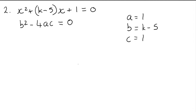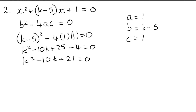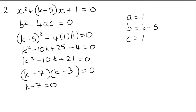So we do k minus 5 all squared minus 4 times a times c. Multiplying that out gives k squared minus 10k plus 25, and minus 4 times 1 times 1 is just minus 4. Tidying up, 25 minus 4 is plus 21. So k squared minus 10k plus 21 equals 0. Since 7 and 3 make 21, when we factorise it's k minus 7 times k minus 3. Put both equal to 0, so k equals 7 or k equals 3.